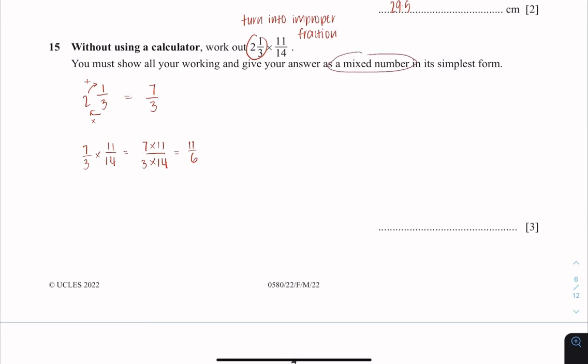That is 11 over 6. They want our answer in mixed numbers. So to do that you just divide it like so, giving us 1 and 5 over 6. Final answer in mixed number is 1 and 5 over 6.